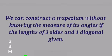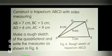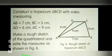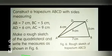Next, constructing trapeziums. We can construct a trapezium without knowing the measure of its angles if the lengths of 3 sides and 1 diagonal are given. Let us see how to construct a trapezium ABCD with sides measuring AB equal to 7 cm.